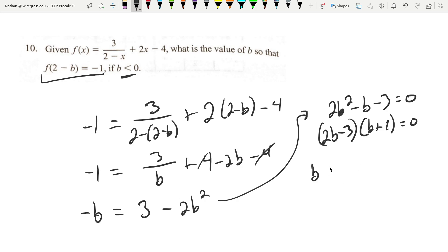And then that gives us the solutions 3 over 2 and b equals negative 1. b is less than 0, which means this one cannot be the correct solution. So b must be negative 1.